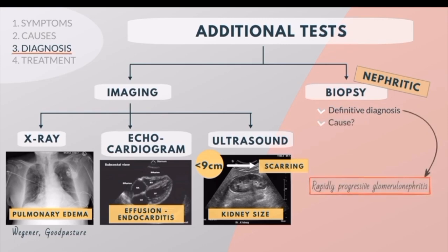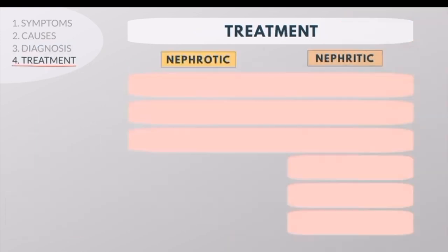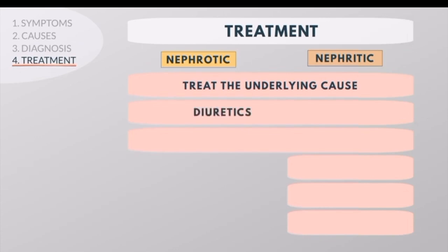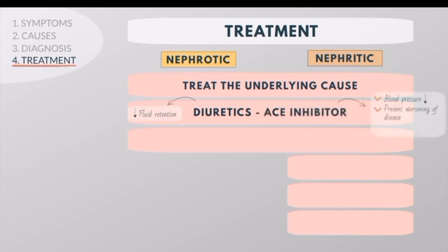A renal biopsy is often used in Nephritic syndrome for definitive diagnosis, to distinguish between primary and secondary causes, to assess rapidly progressive glomerulonephritis, and to evaluate the level of inflammation and fibrosis for prognosis. First-line treatment for both Nephrotic and Nephritic syndromes includes treating the underlying cause, diuretics to decrease fluid retention, and ACE inhibitors to decrease blood pressure, prevent worsening of disease, and decrease proteinuria.